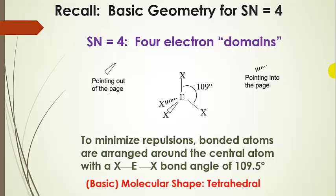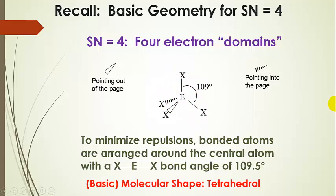It gets even more interesting when we talk about a tetrahedral shape — steric number four. This is our basic geometry with four bonded atoms. One atom is coming out of the screen, one is going behind the screen, and two are in the plane. The bond angles are around 109.5 degrees — all equal and undistorted. This basic molecular shape is called tetrahedral.